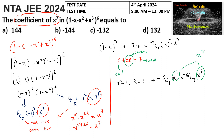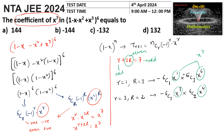So the coefficient contribution here is minus 6C1 times minus 6C3. The next case: when r equals 3 and capital R equals 2, giving 3 plus 4 equals 7. The term is minus 6C3 times x^3 (r odd), and since R equals 2 is even, we get plus 6C2 times x^4. So x^3 times x^4 gives x^7, with coefficient minus 6C3 times 6C2.